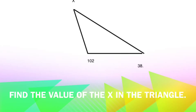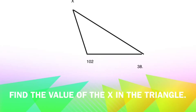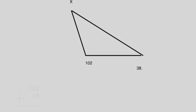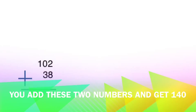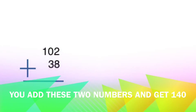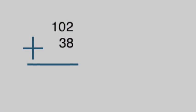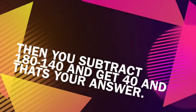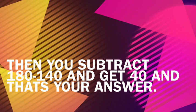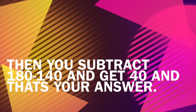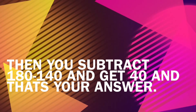Find the value of x in the triangle. You add these two numbers and get 140. Then you subtract 180 minus 140 and get 40, and that's your answer.